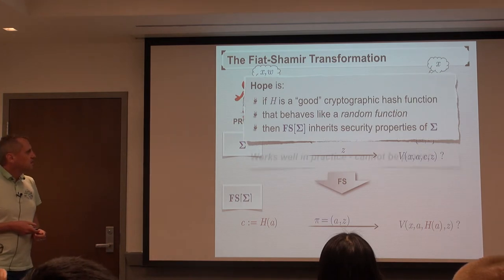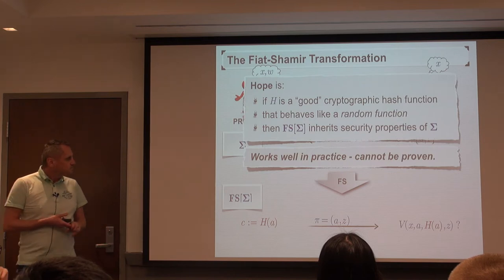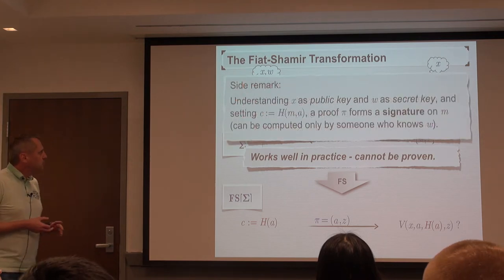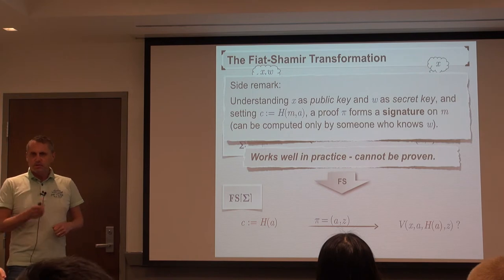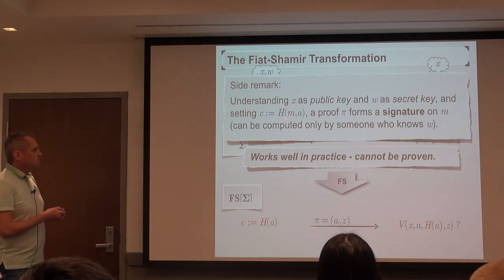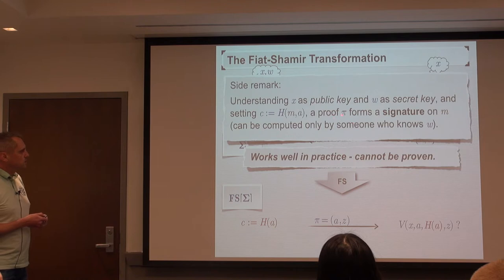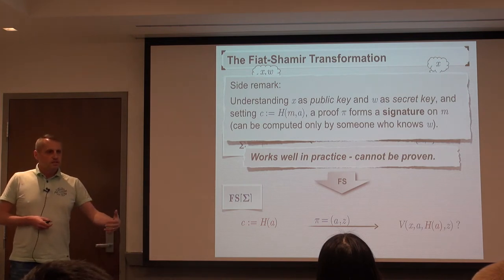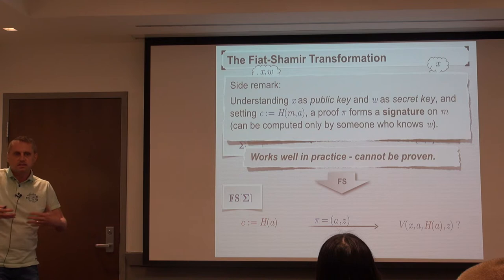The hope — and it's really a hope — is that if we plug in a good cryptographic hash function that behaves like a random function, the Fiat-Shamir transformation inherits the security properties from the interactive sigma protocol. On a side remark: if we understand the instance X as a public key and the witness as a secret key, and additionally put in a message when the prover computes the challenge, then the proof can be understood as a signature on the message M — you can only produce the signature if you know the secret key, but everyone who knows the public key can verify it.